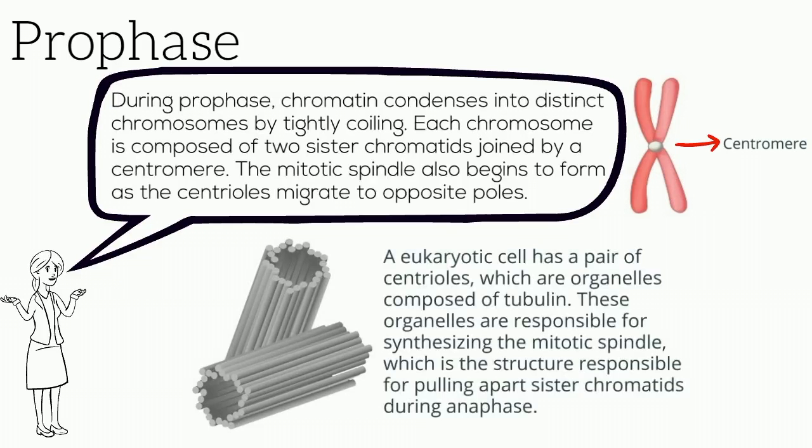The mitotic spindle is responsible for pulling apart sister chromatids during anaphase, and it is synthesized by centrioles, which are organelles composed of tubulin. Each eukaryotic cell has a pair of centrioles.